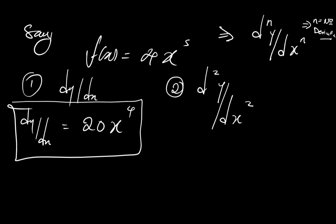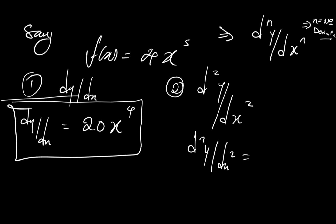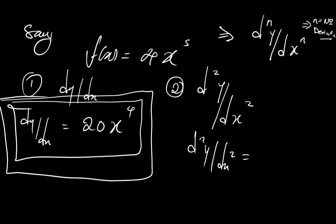To find the second derivative, I can't find it directly. I first have to find the first derivative — which we've already found — and then differentiate it again. So d²y/dx², looking at the first derivative as the new input function, I apply the power rule: 4 times 20 gives 80, and I reduce the power by 1 to get 80x to the third power.